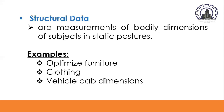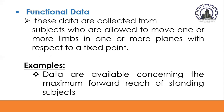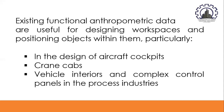Functional data are collected from subjects who are allowed to move one or more limbs with respect to a fixed point. Examples include data on the maximum forward reach of standing subjects. The area swept out by the movement of the hand describes workspace envelopes — zones of easy reach or maximum reach around an operator. Existing functional anthropometric data are useful for designing workspaces and positioning objects within them, particularly in aircraft cockpits, crane cabs, vehicle interiors, and complex control panels.